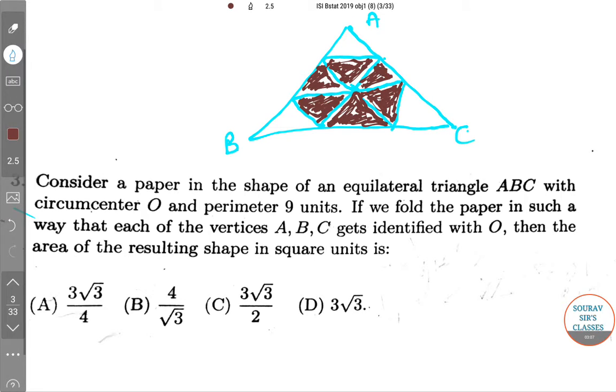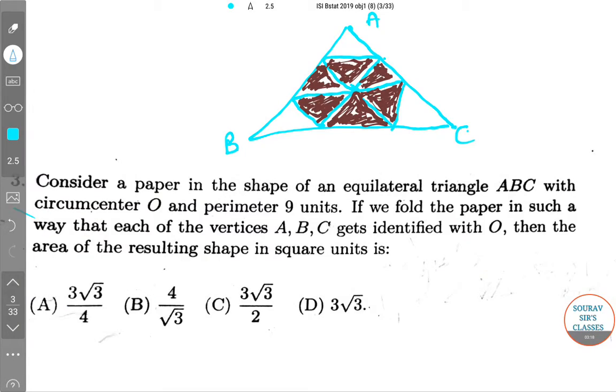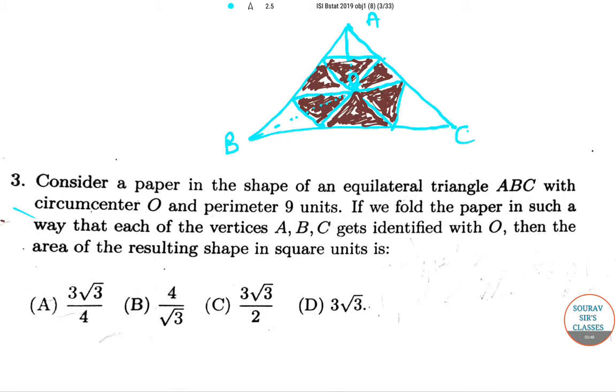We know here that O is the circumcenter, so here you have the circumradius OA, OB, OC.